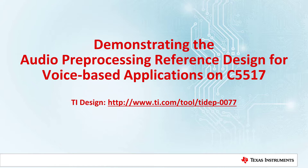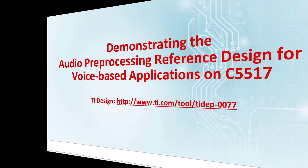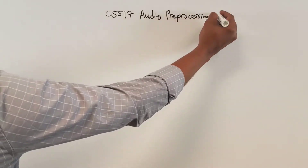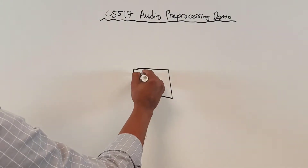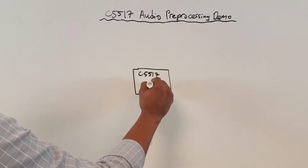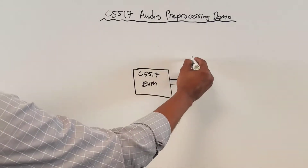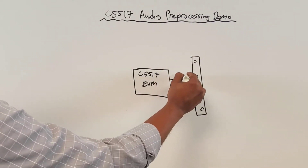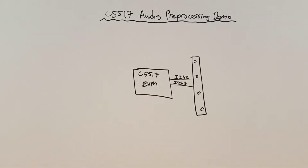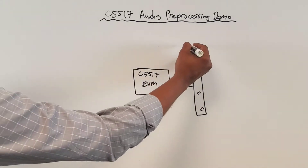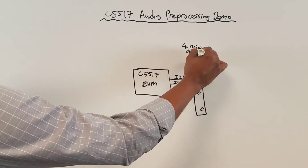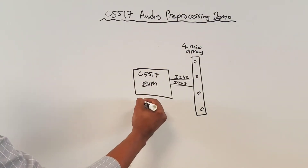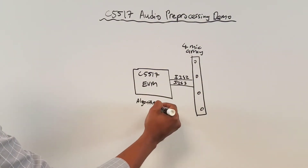In this video, we will discuss the TI Design audio preprocessing demo for the C5517. The demo consists of a C5517 EVM connected to a linear microphone board, or LMB, that has four microphones in a linear geometry. The microphone array board is connected to the C5517 EVM with two I2S lines. There are a few algorithms that run on the C5517 that do the audio processing.